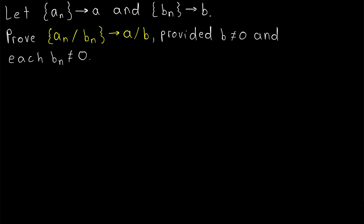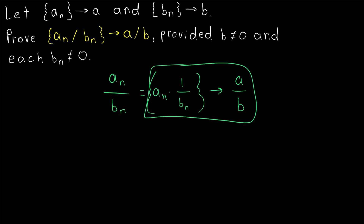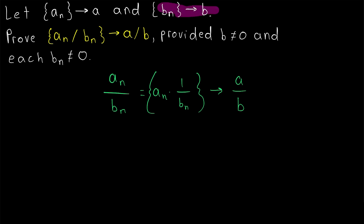Your first thought might be: isn't dividing the same as multiplying by a reciprocal? So the sequence an over bn is the same as an multiplied by 1 over bn. Perhaps we could conclude that this sequence converges to a over b, because we've already proven the limit law for the product of sequences. This idea is good. The only problem is we would need to prove that the sequence bn converging to b implies that the sequence 1 over bn converges to 1 over b. If we can do that, then we're golden.